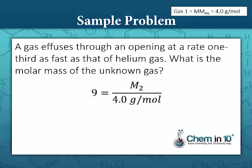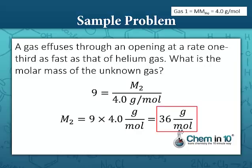To solve for the molar mass of our unknown, M2 equals nine times 4.0 grams per mole, which equals 36 grams per mole. That is the molar mass of our unknown gas. Since it is heavier than helium, which is only 4 grams per mole, it should move at a slower rate than helium, which it does — it moves at one-third as fast as the rate of helium gas.